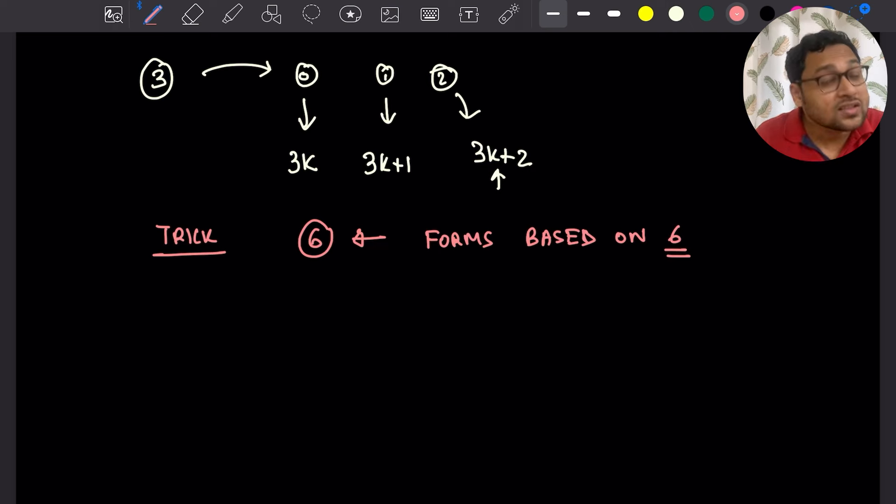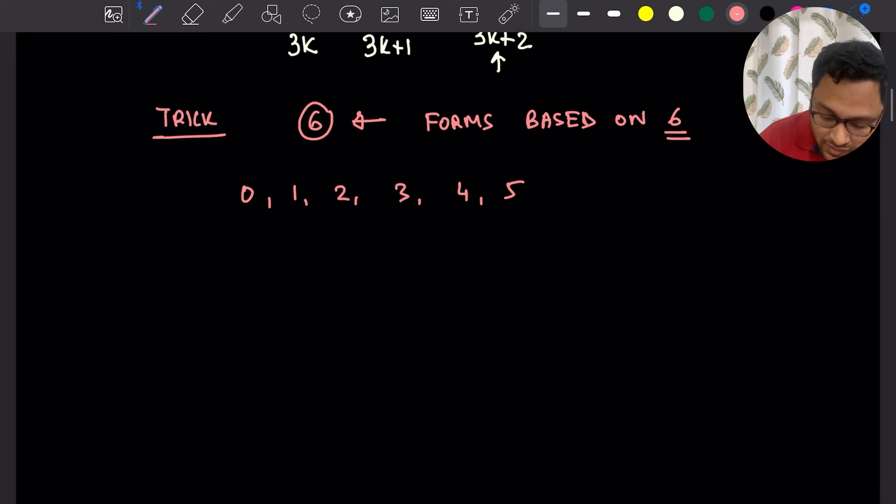What are the forms of numbers based on number 6? If you divide any number by 6, the remainders are 0, 1, 2, 3, 4, 5. So the forms are 6k, 6k plus 1, 6k plus 2, 6k plus 3, 6k plus 4, 6k plus 5.